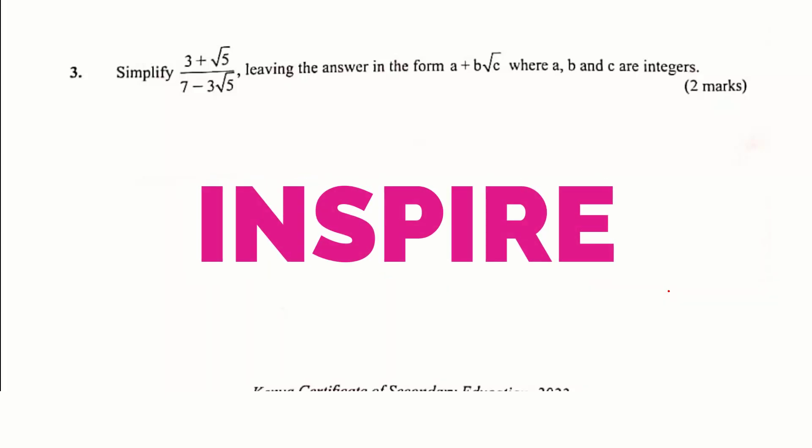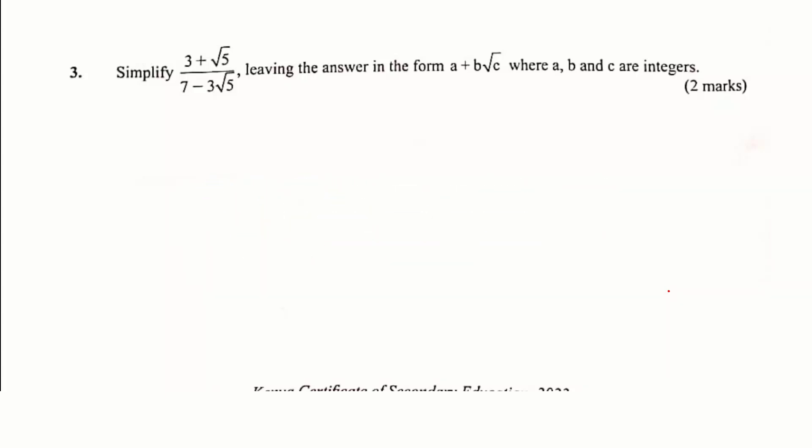Question number 3. Simplify 3 plus root of 5 divided by 7 minus 3 root of 5, leaving the answer in the form a plus b root c, where a, b, and c are integers.